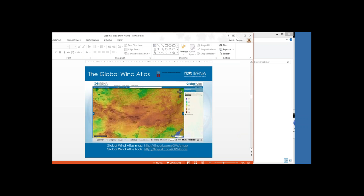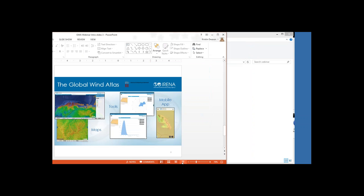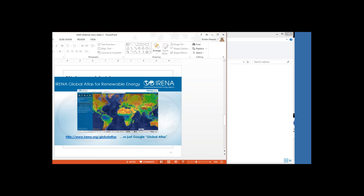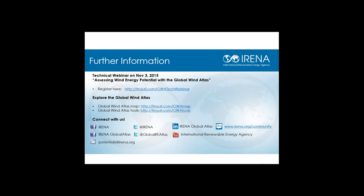Jake Badger responded: the spatial resolution has a few layers. A calculation for the global wind atlas is made every 250 meters — so every 250 meters around the globe, there's a calculation of the predicted wind climate. The elevation data used was at 150-meter resolution, and for the roughness information — describing the kind of surface you're making a wind prediction over — the grid size is every 300 meters. So the answer is nuanced: calculations are made every 250 meters, but the actual surface description depends on whether it's elevation or roughness.